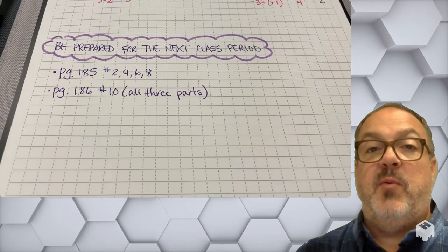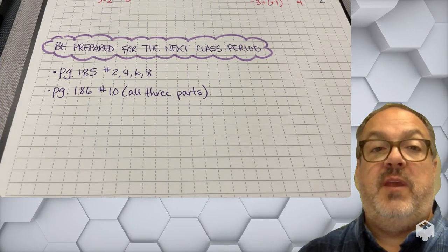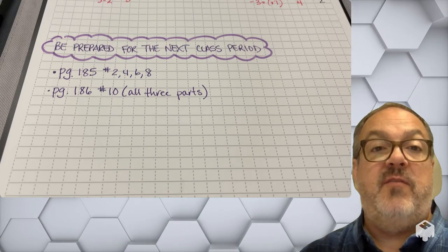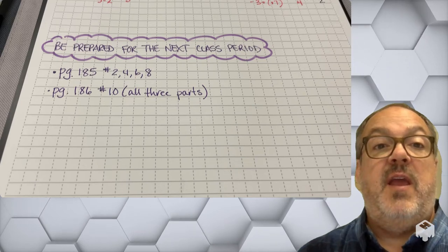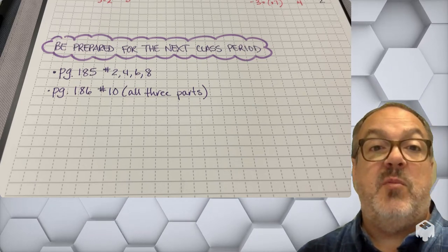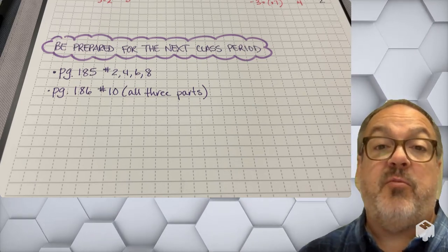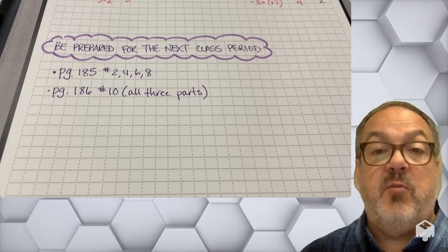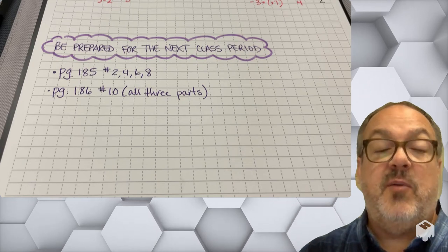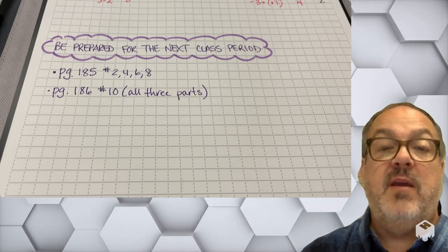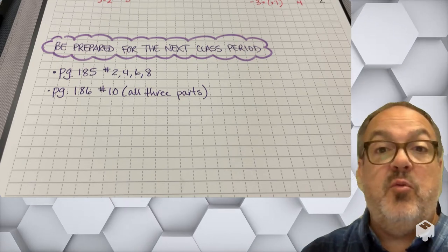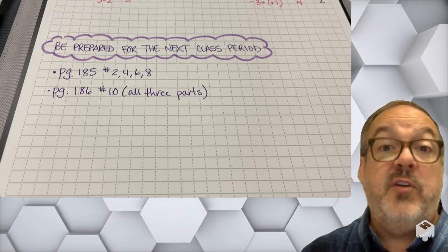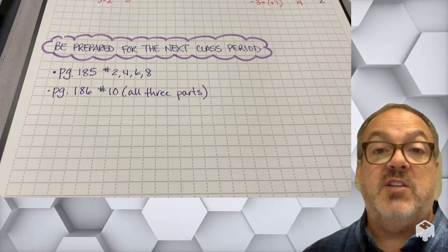All right, so I want you to be prepared for the next class period by working on the following problems: page 185, numbers 2, 4, 6, and 8, and page 186, number 10. But I want you to do all three of those parts. Make sure you upload a picture of your work to classroom before the start of the next class, so I can give you the proper feedback. And make sure that you are working with me on the appropriate problems, or you could be working on some challenge problems.